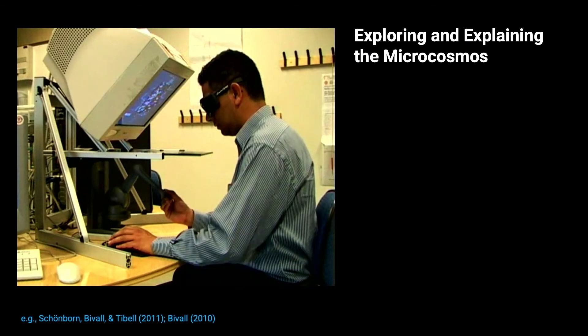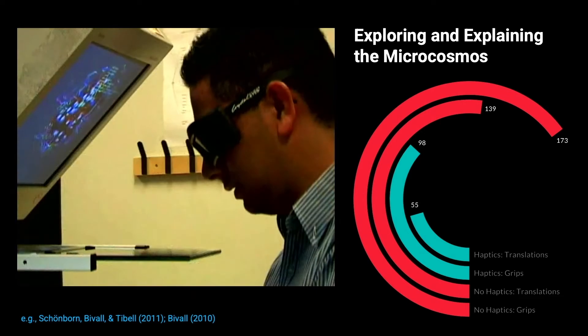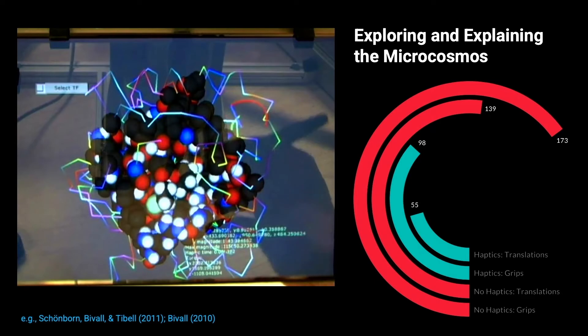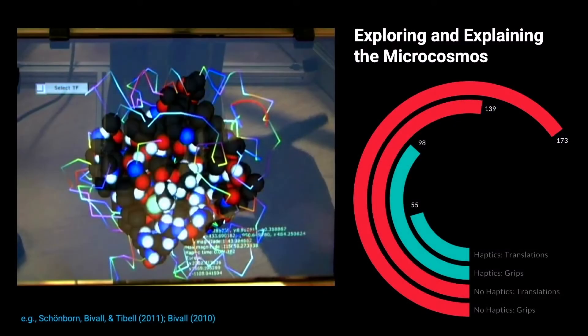Some of our work explored how students interpreted a visualization of a molecule that was 3D, and while they had a stereoscopic interpretation of the molecule, at the same time we added force feedback, where they could actually feel the interactions between the molecules. While they performed the task, we also tracked what they were doing with the system — what types of visual representations and what visual language they were using when they were doing different parts of the task.